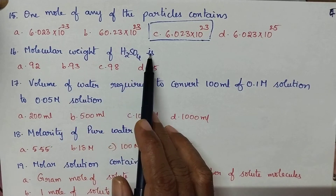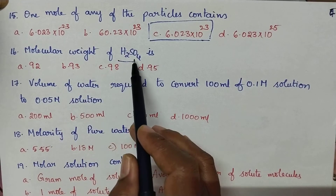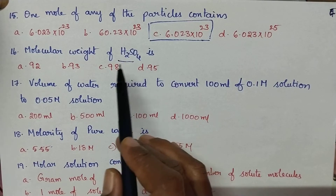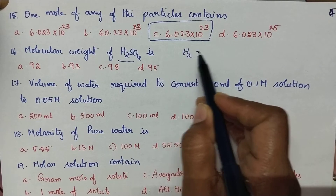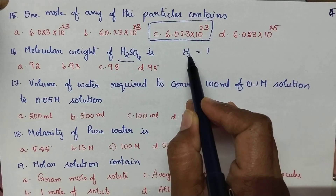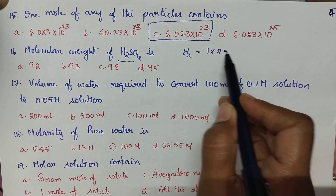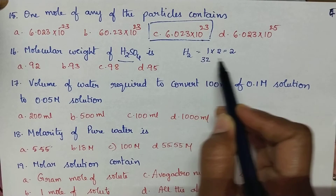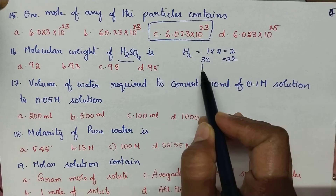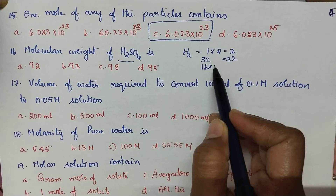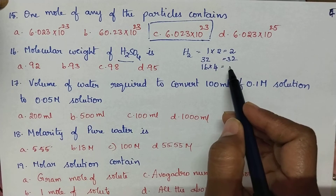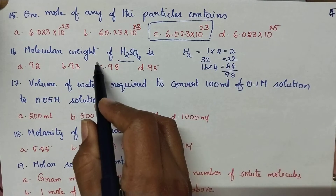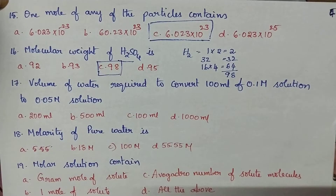Molecular weight of sulfuric acid (H₂SO₄): atomic weight of H is 1, with 2 atoms = 2; atomic weight of S is 32; atomic weight of O is 16, with 4 atoms = 64. Total molecular weight = 2 + 32 + 64 = 98. Option C is the right answer.